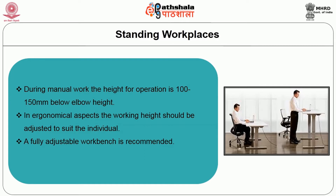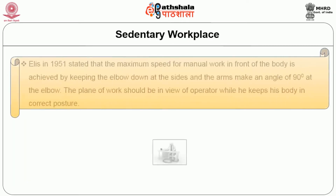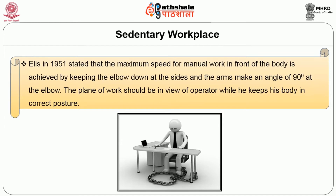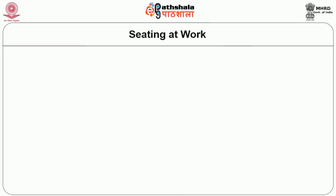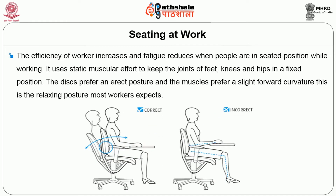A fully adjustable workbench is recommended. Sedentary workplace: Elise in 1951 stated that maximum speed for manual work in front of the body is achieved by keeping the elbow down at the sides and arms making an angle of 90 degrees at the elbow. The plane of work should be in view of the operator while he keeps his body in correct posture. Seating at work: The efficiency of the worker increases and fatigue reduces when people are in a seated position while working. It uses static muscular effort to keep the joints of feet, knees and hips in a fixed position. The discs prefer an erect posture and the muscles prefer a slight forward curvature — this is the relaxing posture most workers expect.